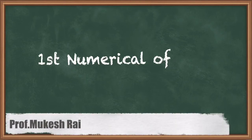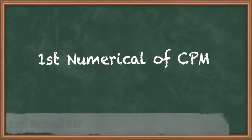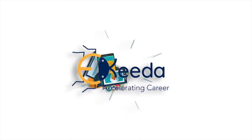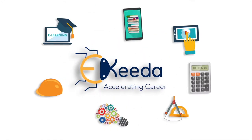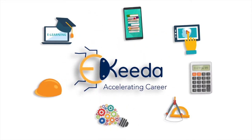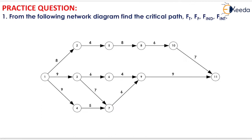Hello students, today we are going to solve the first numerical of CPM. The question is given as: from the following network diagram, find the critical path, total float, free float, independent float, and interfering float.